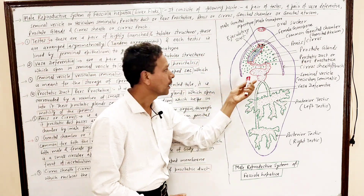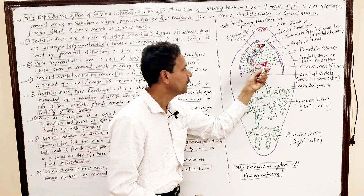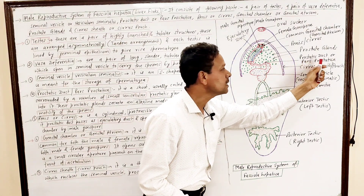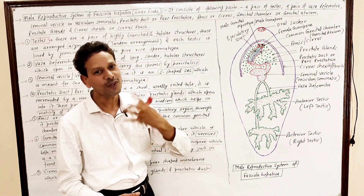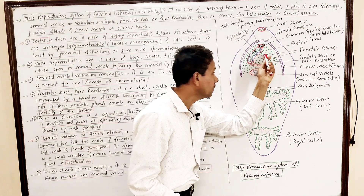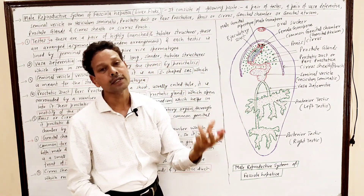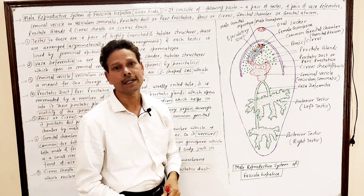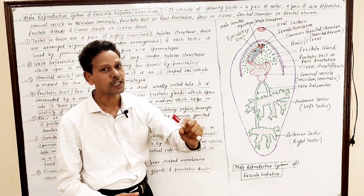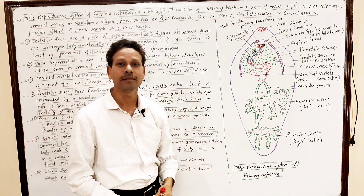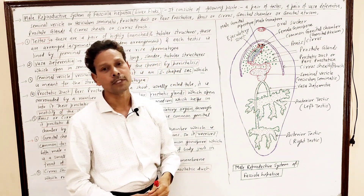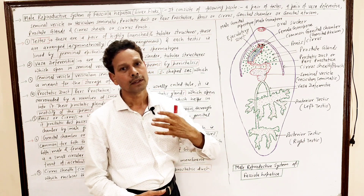From the seminal vesicle, sperms are carried via the prostatic duct, also called pars prostatica, which is an almost twisted, tubular structure. This prostatic duct is surrounded by a large number of unicellular prostate glands. The prostate glands secrete an alkaline medium, which helps increase the motility of sperms.